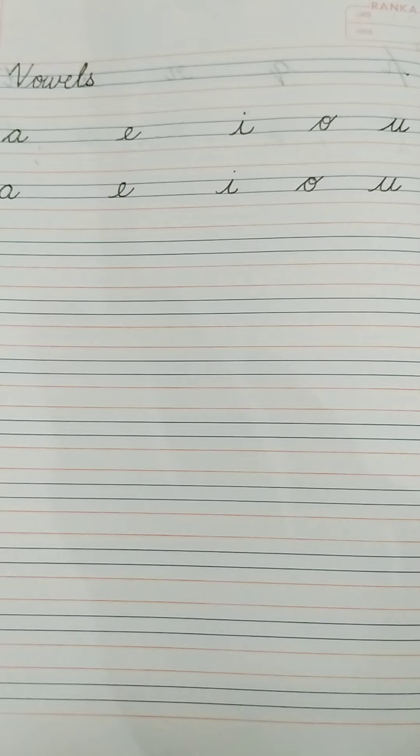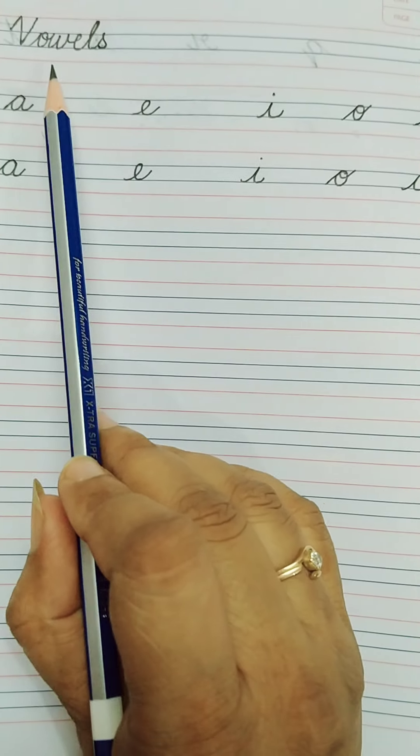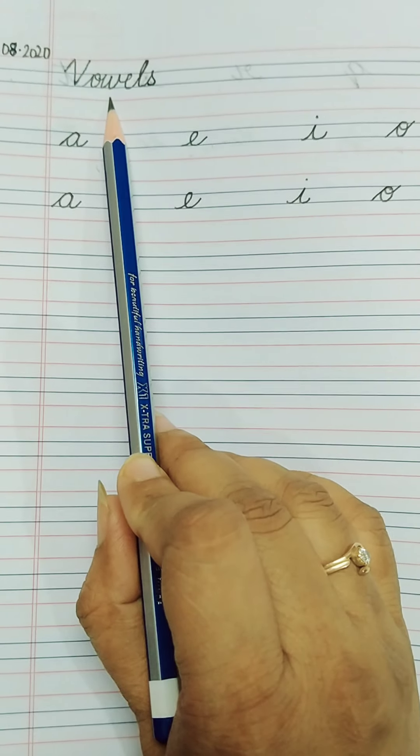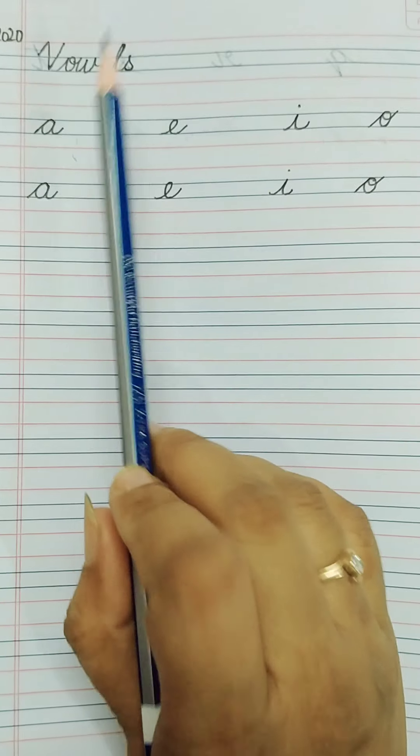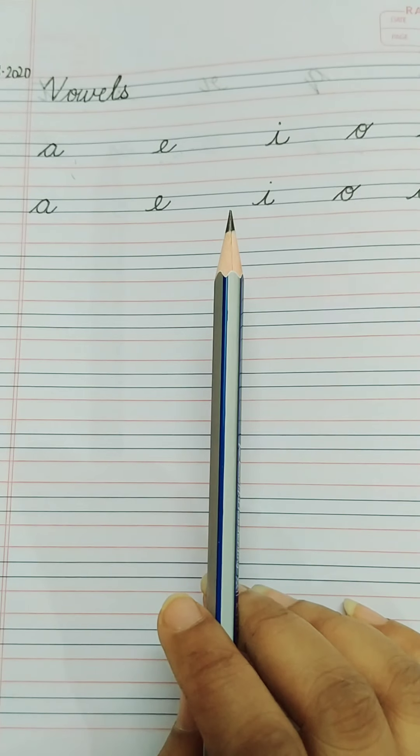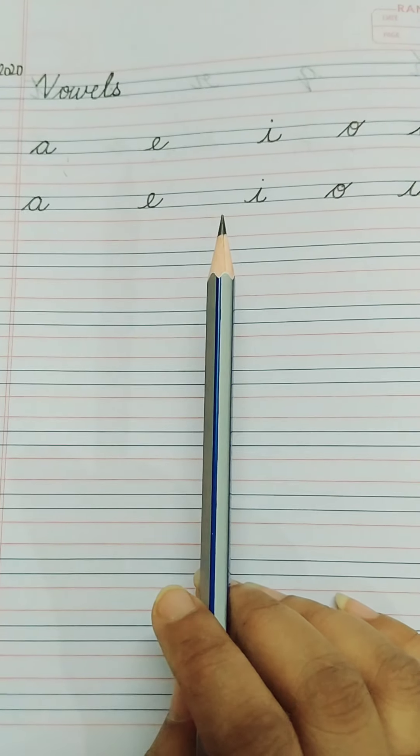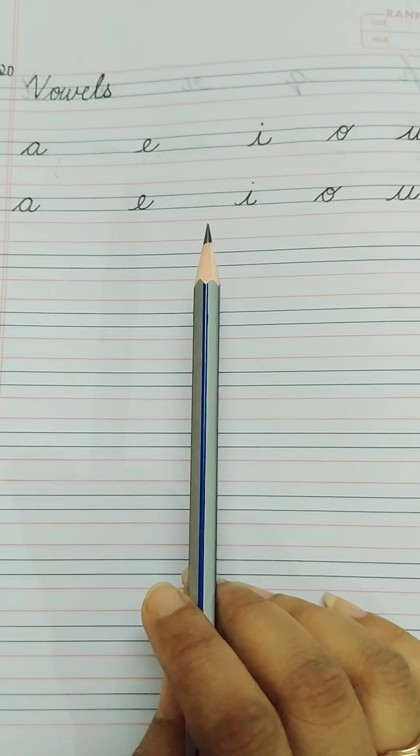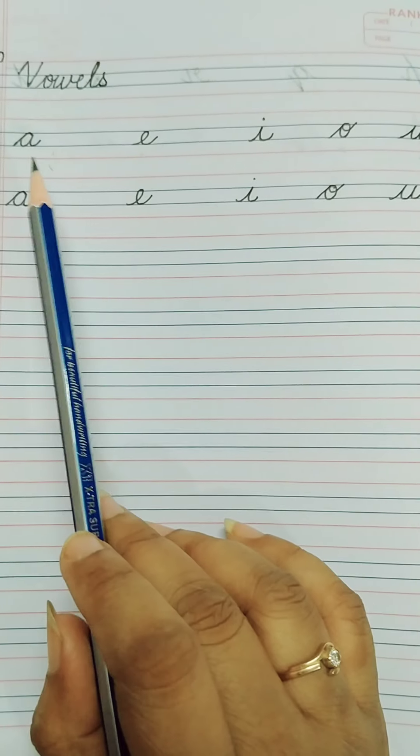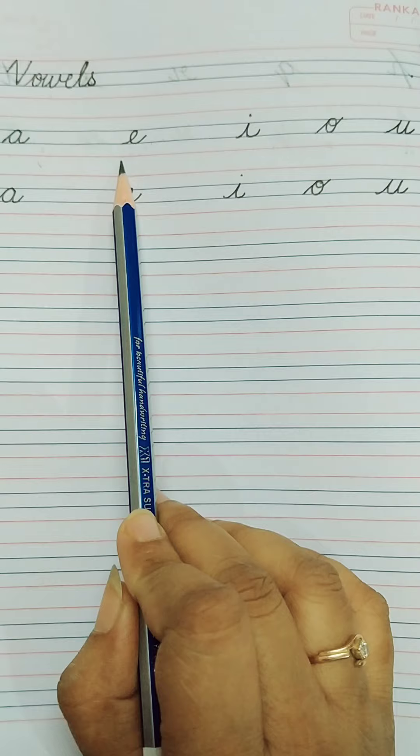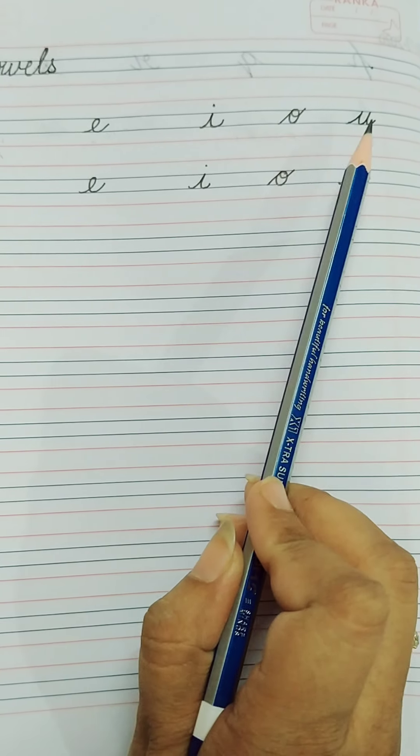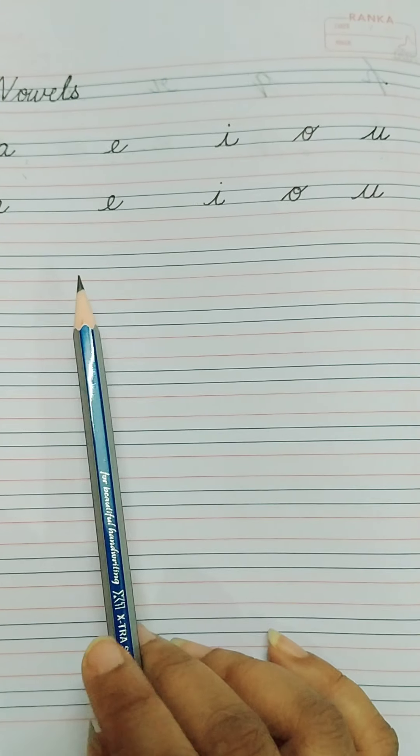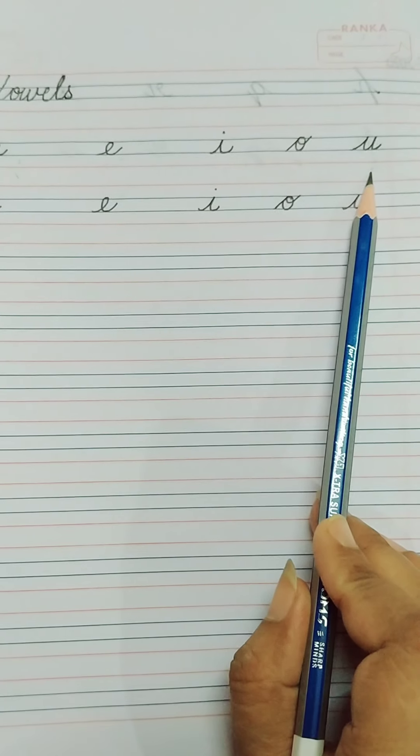Dear children, today we will do English and in that we are going to learn vowels. So what are vowels? In English, there are five special letters: A, E, I, O, U. These letters are called vowels.